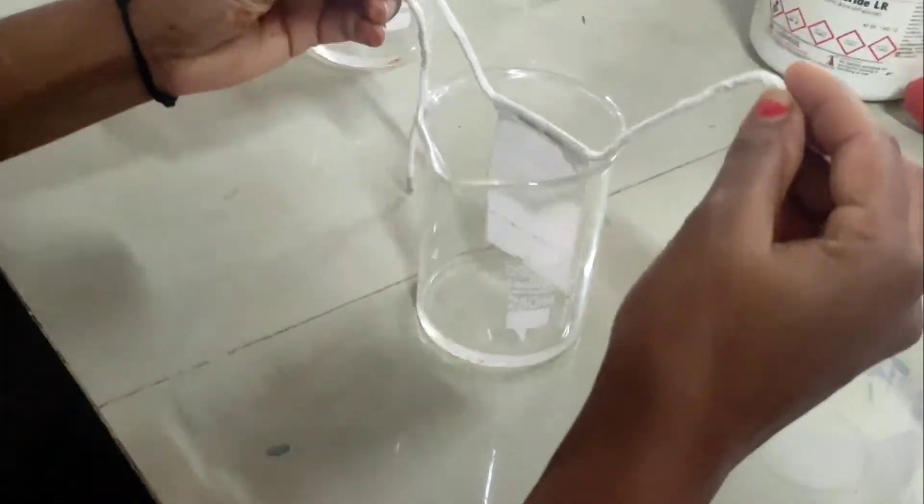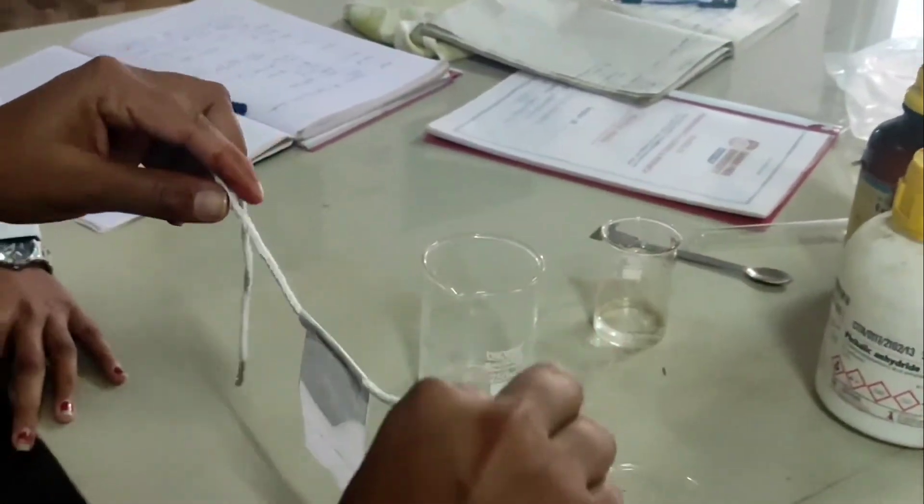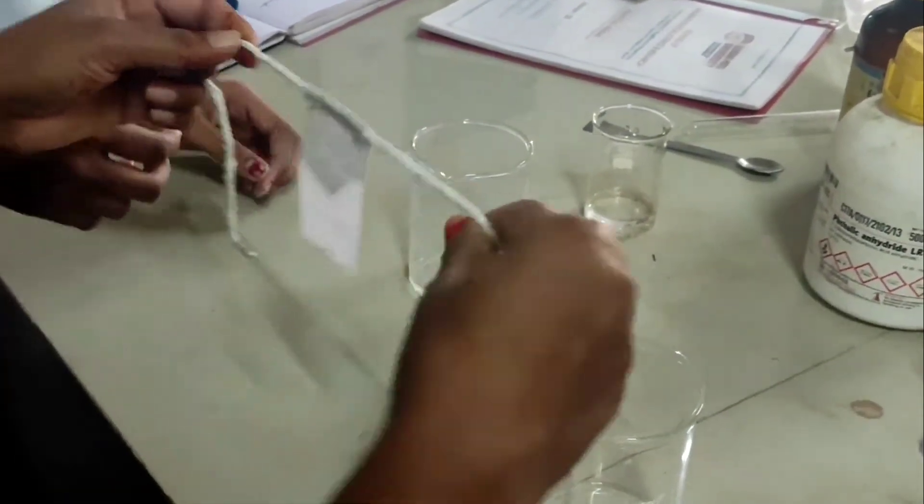Lastly, you have to calculate the RF value by using the formula: distance traveled by solute divided by distance traveled by solvent.